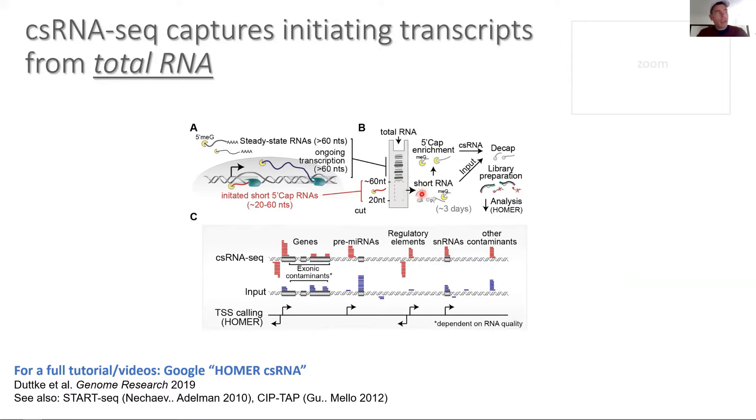By theory, these small RNAs have to be in the process of being generated or have been degraded. Because they could have been degraded, we take about a 10% input, and this is just a total short RNA input.